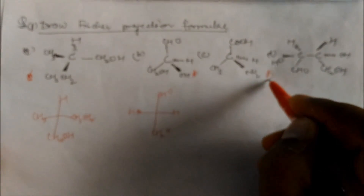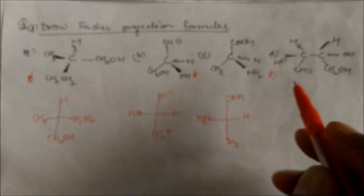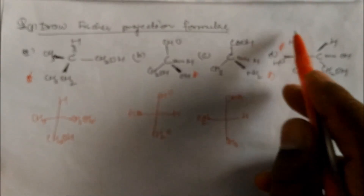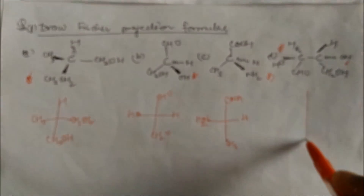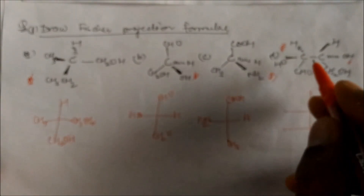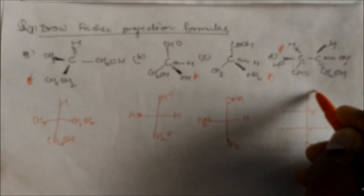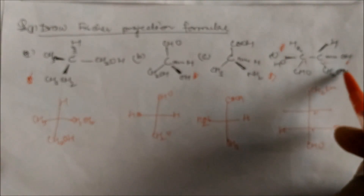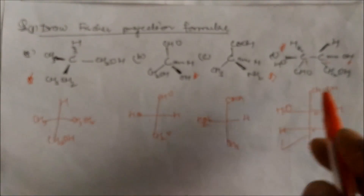For a two-chiral-center compound: observing carbon one from one side gives OH on the right and hydrogen on the left; observing carbon two from its side gives the respective groups. Drawing the structure: carbon one at top with CHO group, carbon two below it with CH2OH. For carbon one, OH is on the right-hand side and hydrogen on the left. Seeing from the other side, hydrogen comes to one side and OH to the other. These are the answers for all four questions.